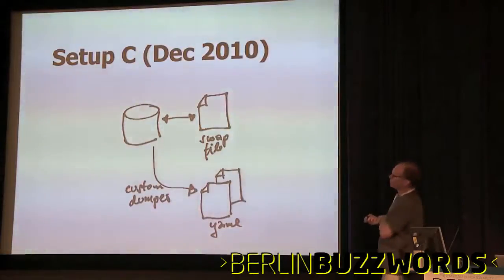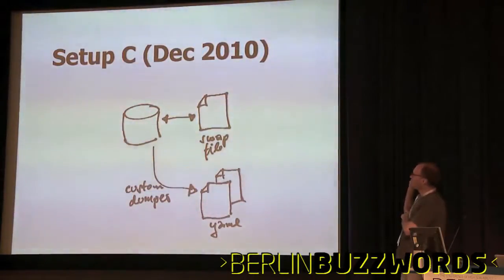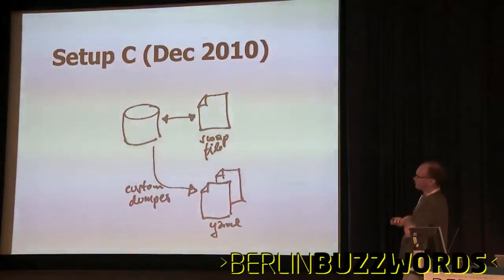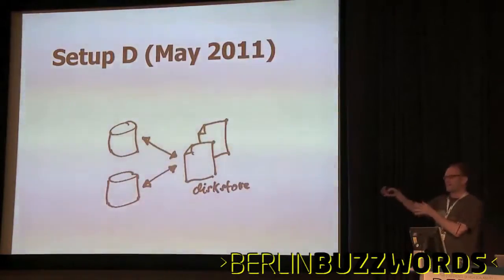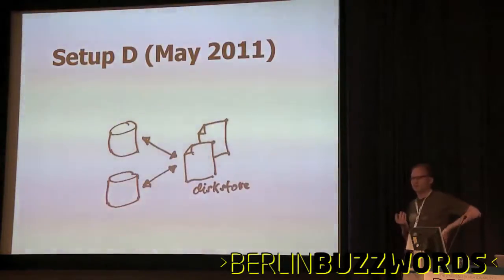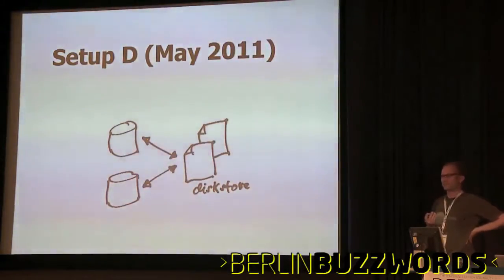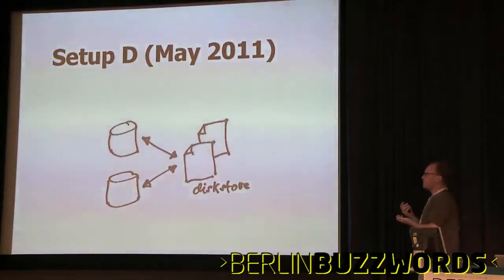This worked pretty well for a long time — we turned it on in January and it ran continuously until last week basically. The Redis process had an uptime of 150 days, doing billions of operations in that time. It was running very stably with virtual memory. Still, it was a somewhat clunky setup, and we eventually came to a point where we actually had to do sharding, although we tried to avoid it as long as possible.